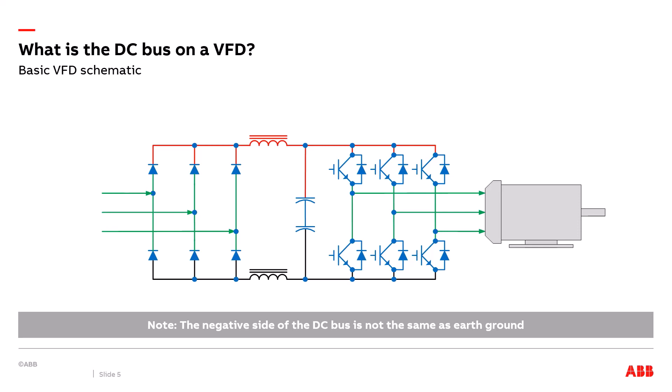Here is a basic variable frequency drive schematic. On the top there in yellow by the red plus sign is considered the positive DC bus. The yellow highlighted line going horizontally on the bottom by the red minus sign is the negative DC bus. It's very important to notice that the negative DC bus is not the same as earth ground. So when we hook up our meter to the drive's DC bus, we just hook up one voltage probe to the positive side and the other voltage probe to the negative side to take the DC bus measurement.